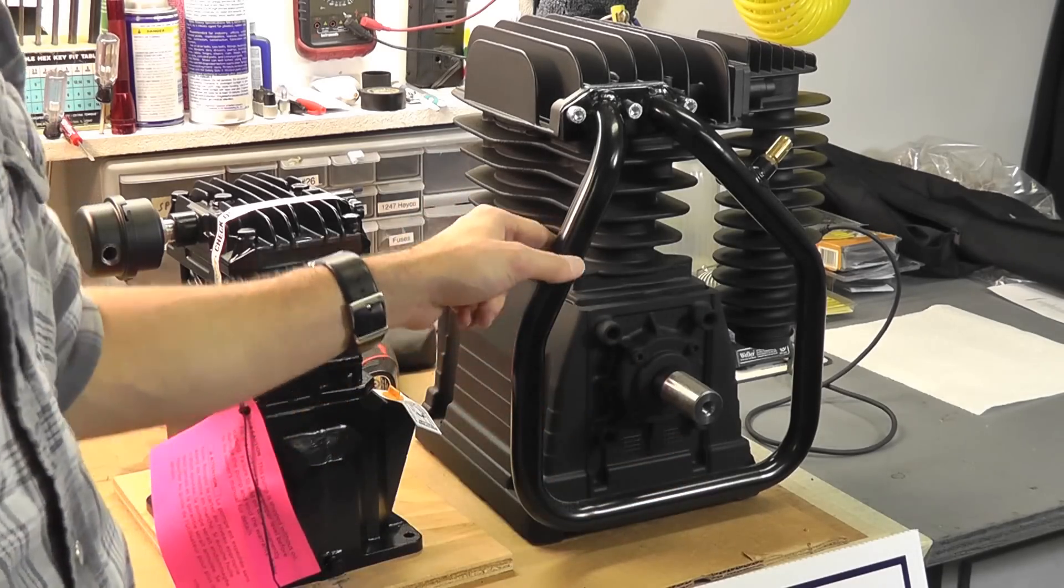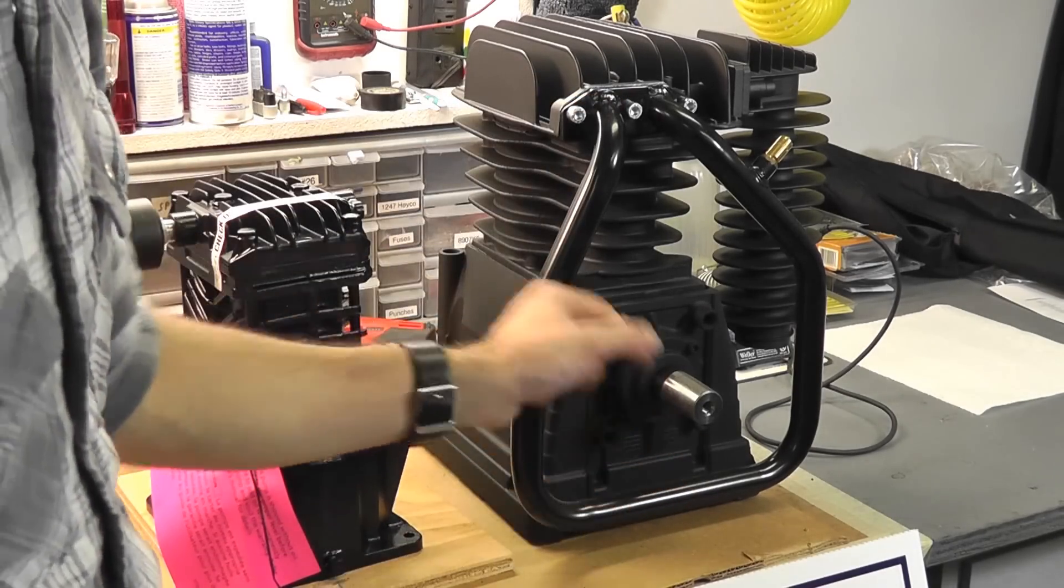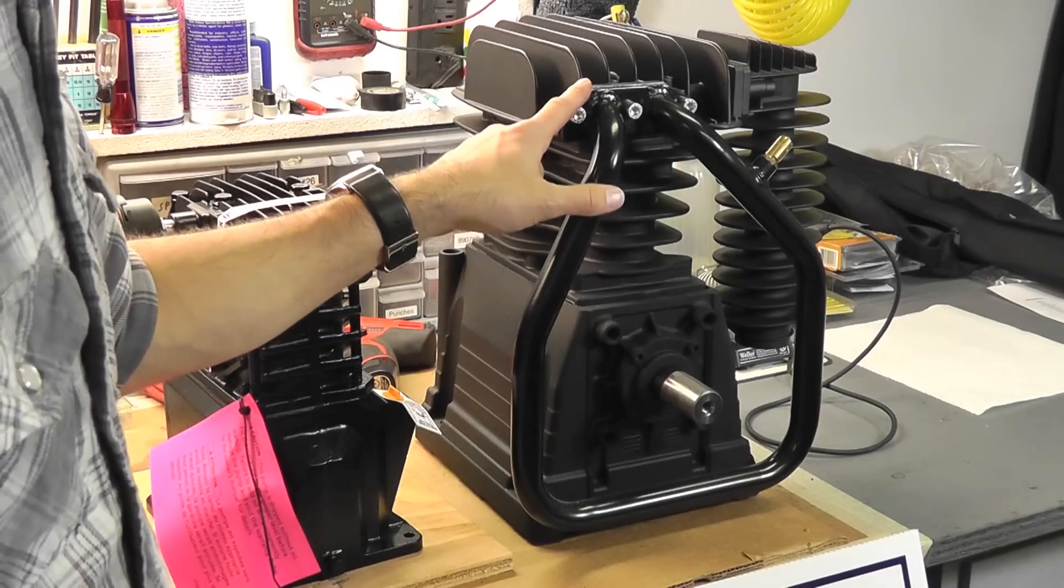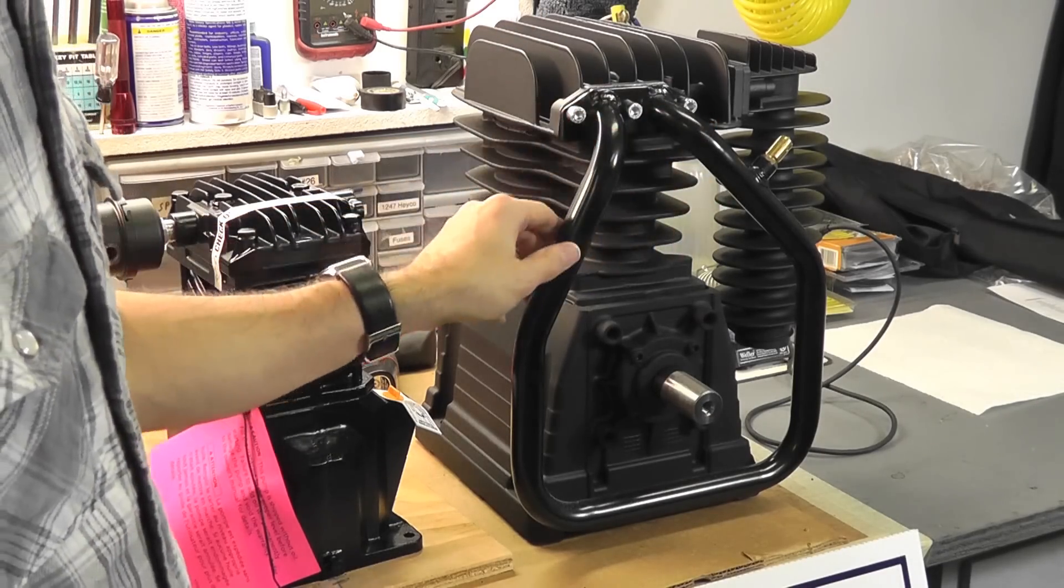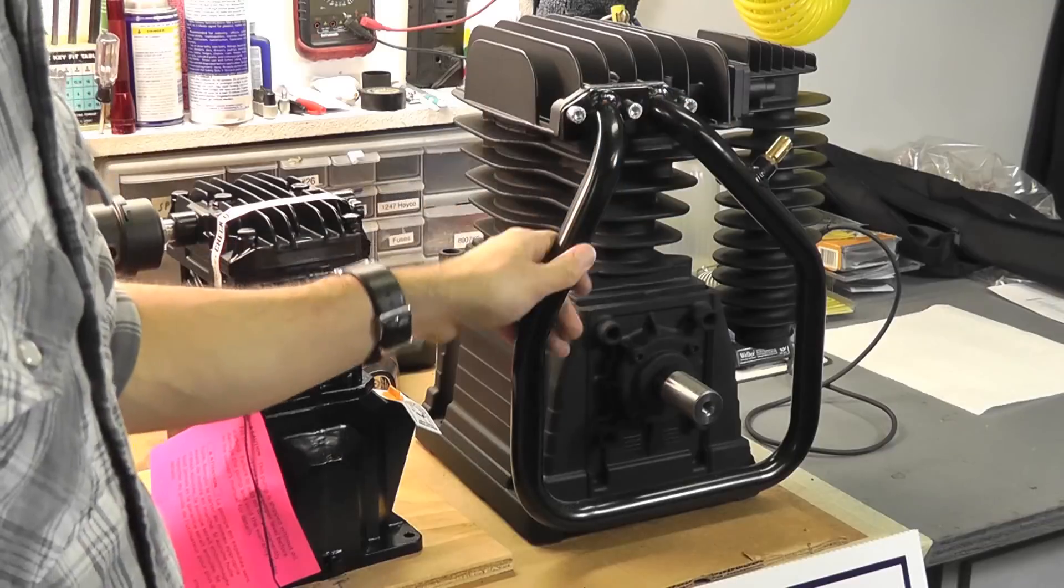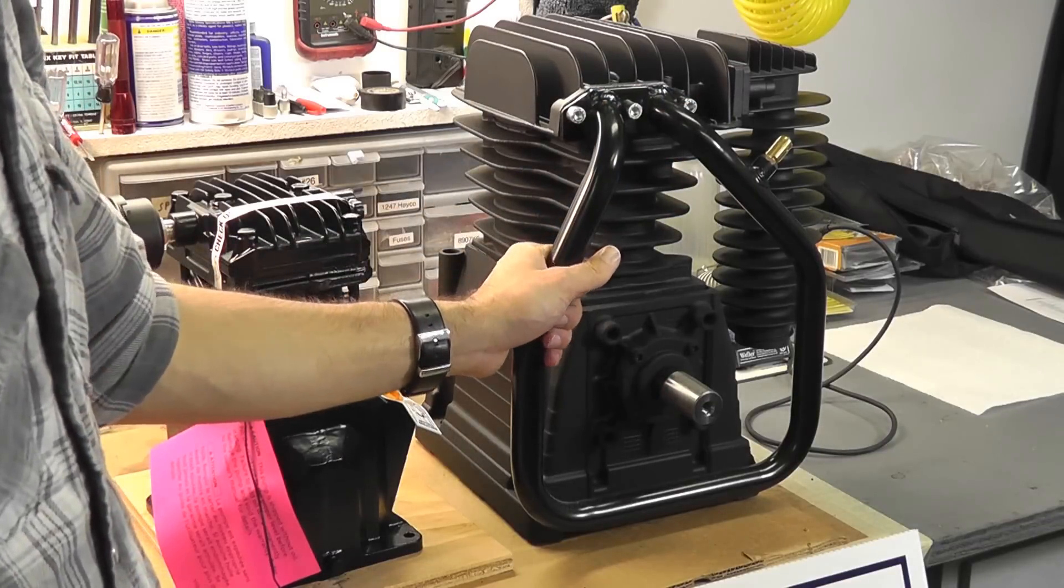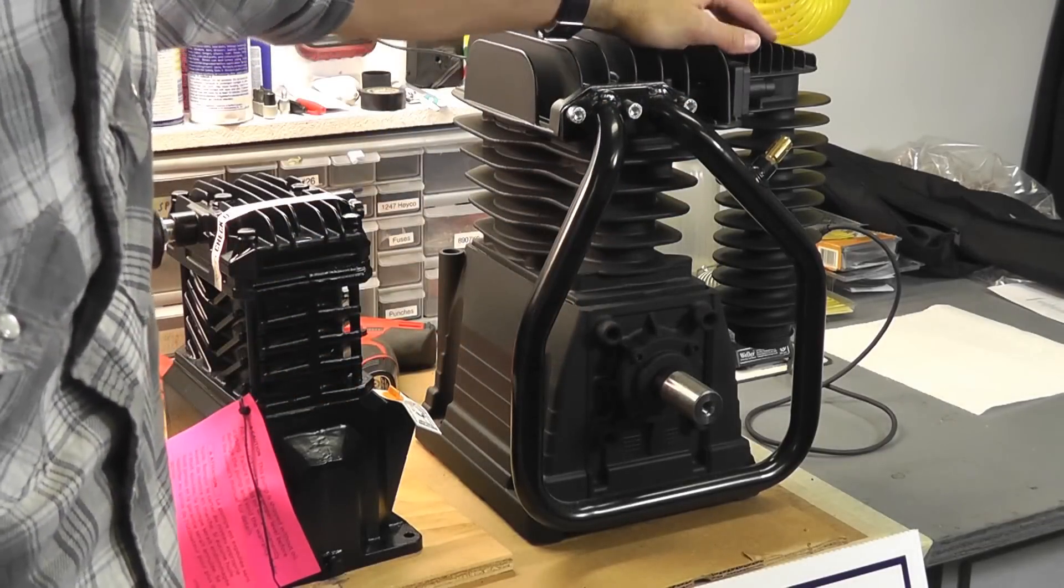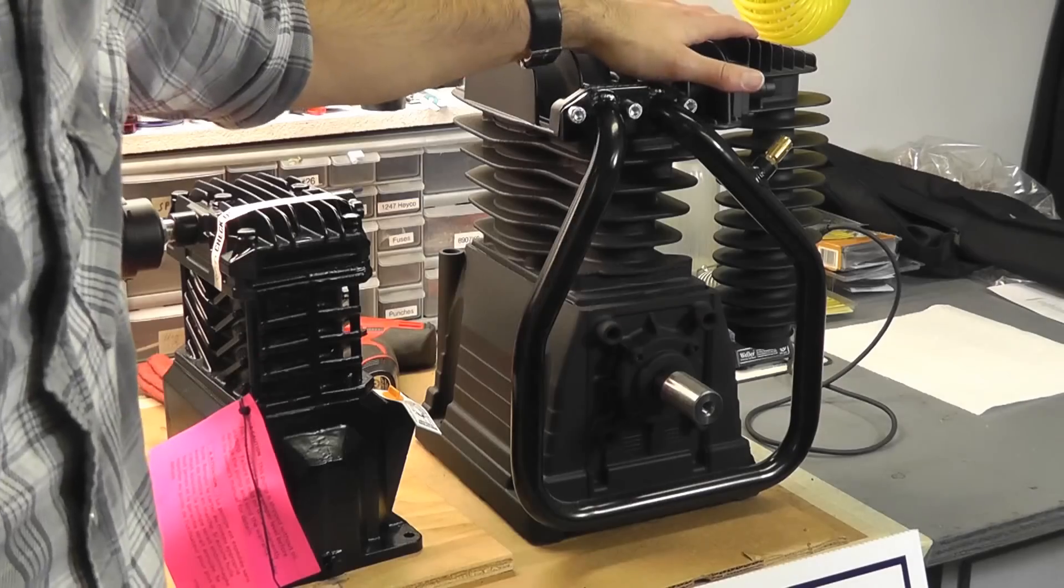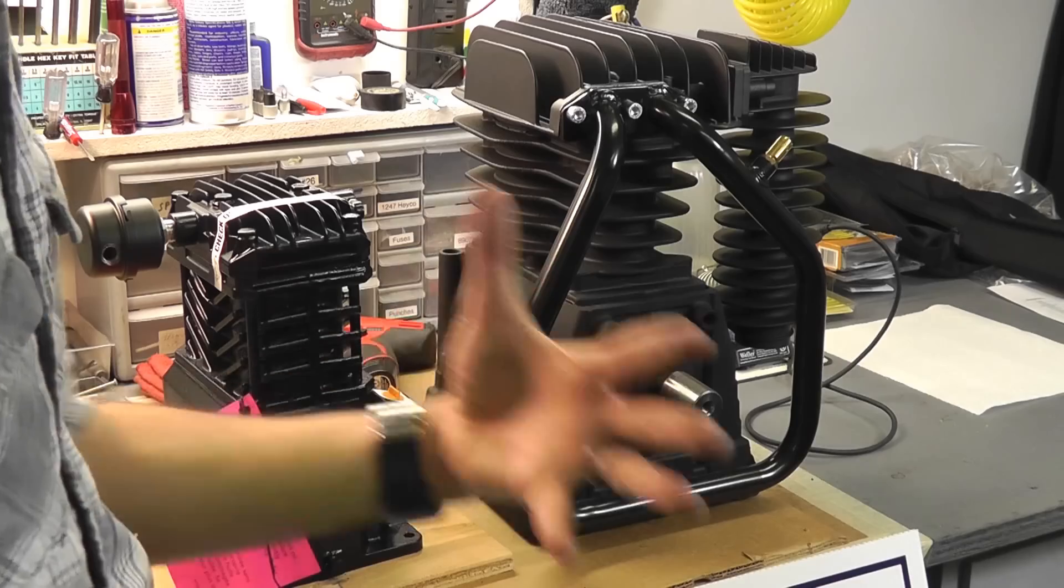One big giveaway is the intercooler tube. This is a three-quarter inch tube that basically connects the low pressure chamber to the high pressure chamber, or one cylinder to the next. So, that is the intercooler, and of course you have your aftercooler over here, which is finned, to help cool the air before it reaches the tank. That's why it's finned, to help dissipate that heat.